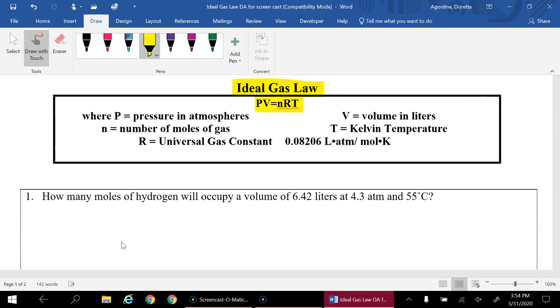The ideal gas law is PV equals nRT, and we have to remember that because we have a gas constant here that has the units of liter atmospheres per mole Kelvin, our pressure needs to be in atmospheres, our volume needs to be in liters, our temperature has to be in Kelvin, and n has to be the number of moles.